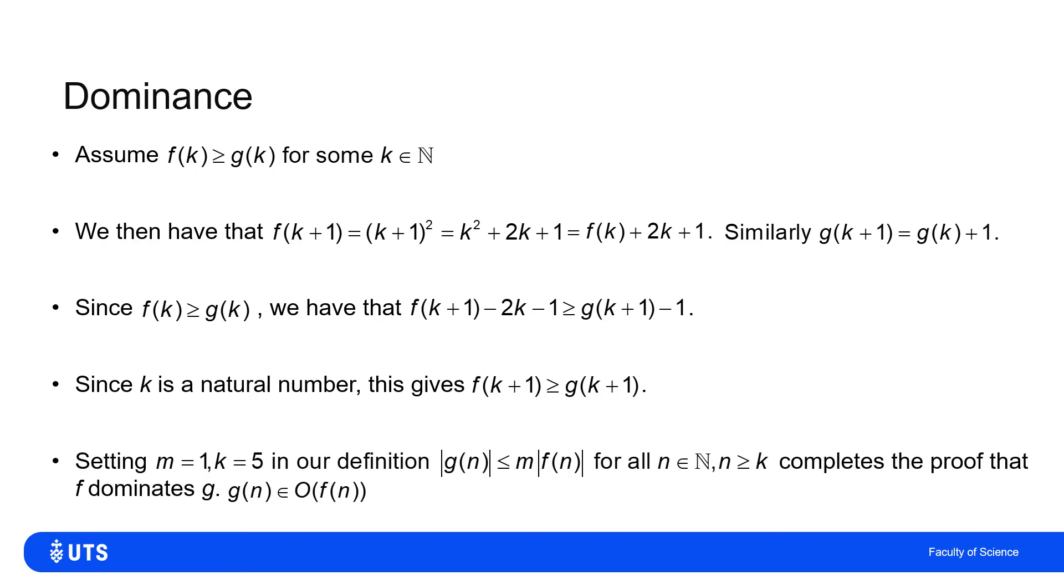So in terms of just formalizing the proof, I can set m to be 1 and k to be 5, because I showed that f of 5 was greater than or equal to g of 5. So I showed it was ahead by k equals 5. And I can show that it never loses that lead. So I've shown that f dominates g. So g of n belongs to the set of functions dominated by f of n. So f of n is in big O of f of n.